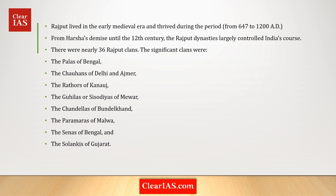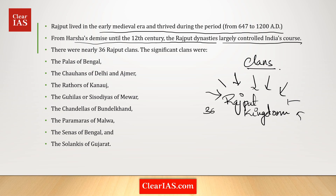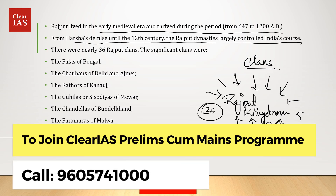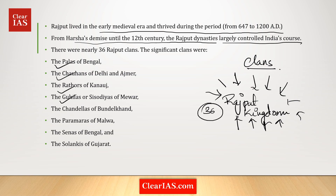The Rajputs lived in the early medieval era and thrived during the period 647 to 1200 CE. From Harsha's demise until the 12th century, the Rajput dynasties largely controlled India's political landscape. There were 36 clans forming the Rajput kingdom. Some significant clans include the Palas of Bengal, the Chauhans of Delhi and Ajmer, the Rathors of Kanauj, the Guhilas or Sisodias of Mewar, the Chandelas of Bundelkhand, the Paramaras of Malwa, the Senas of Bengal, and the Solankis of Gujarat.